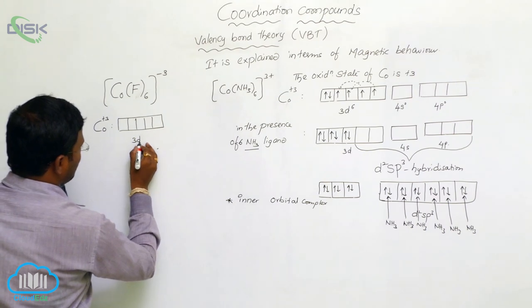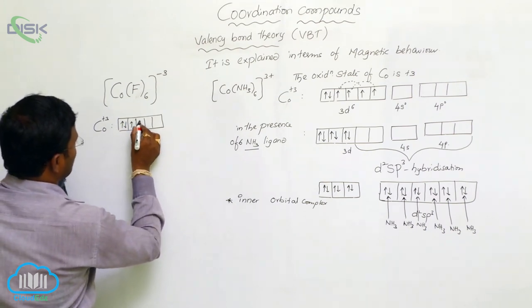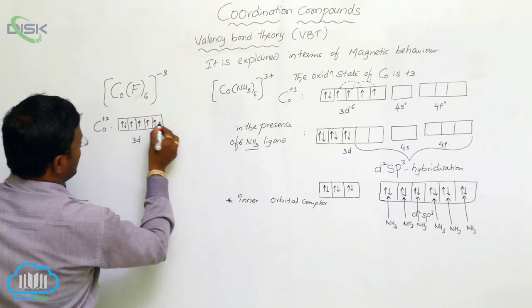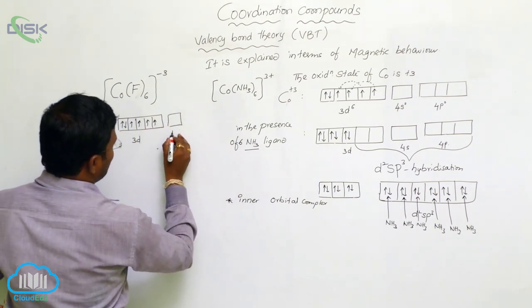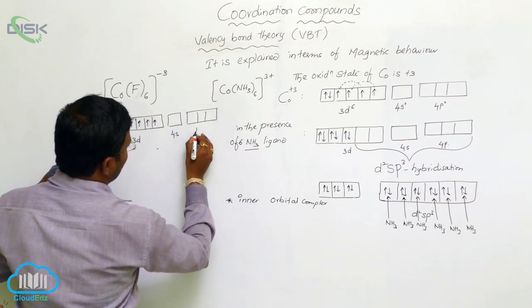Which orbital? 3d orbital with 6 electrons, and 4s orbital is empty. 4p orbital is also empty.